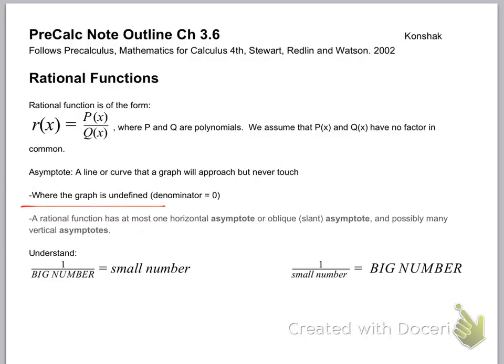And it says that a rational function has at most one horizontal asymptote or oblique asymptote, so a slant, and possibly many, many, many vertical asymptotes. You're basically always going to have some type of vertical or oblique asymptote. And you might have none or a whole bunch of vertical asymptotes. Basically, if the bottom ever going to equal zero, there's a vertical asymptote.